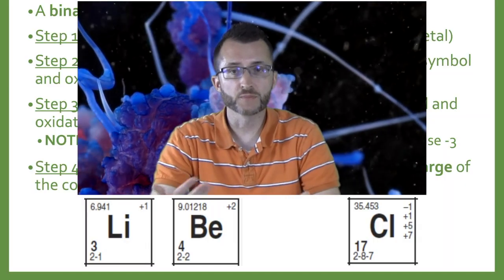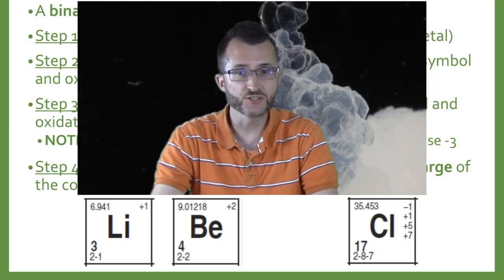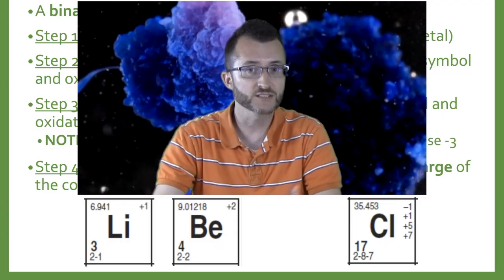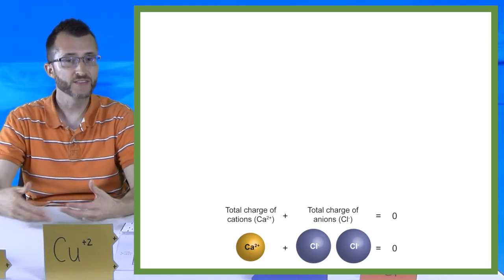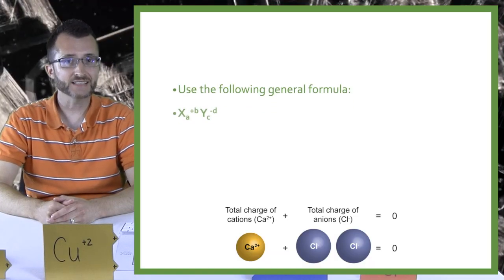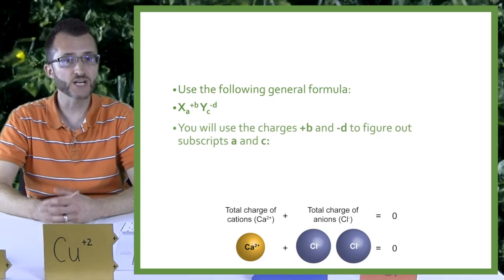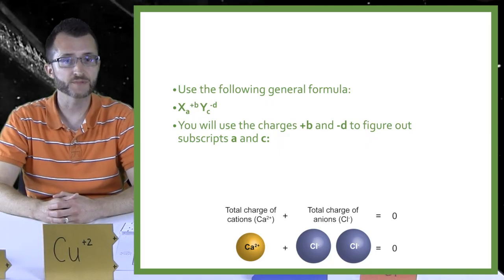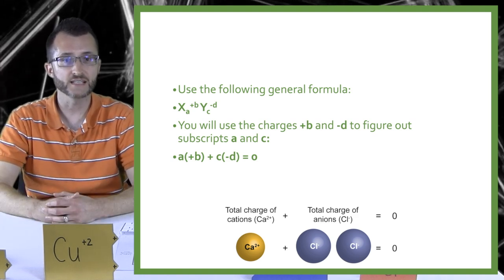So if we were given a name involving lithium or beryllium, we'd go to those oxidation states on the periodic table and see that we only have one listed, so there's no confusion when putting together our formula. Now chlorine does have multiple oxidation states, but it's a nonmetal listed as the second element, so we just use that top negative charge. For those more mathematically inclined, use the general formula: X subscript A with charge +B, Y with subscript C and charge −D. Use the charges +B and −D to figure out subscripts A and C. The mathematical formula is: A times (+B) plus C times (−D) equals zero.